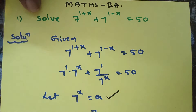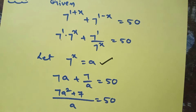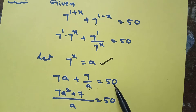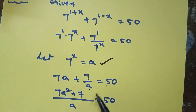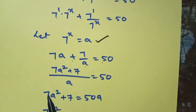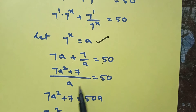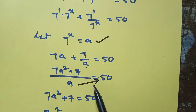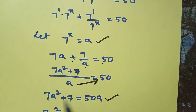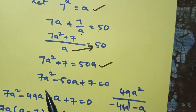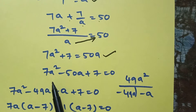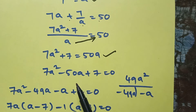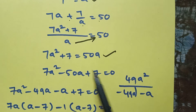Let 7 power x equal to a and substitute. We get 7a plus 7 by a is equal to 50. Taking the LCM, it becomes (7a squared plus 7) divided by a is equal to 50. Sending a to the right side gives 50a.